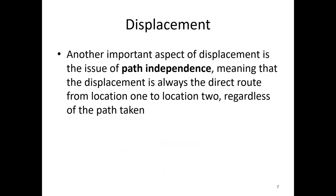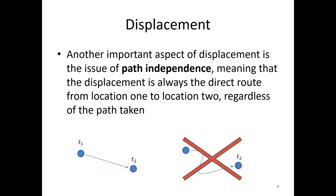An important aspect of displacement is path independence: displacement is always the direct route from location one to location two, regardless of the actual path taken. So even if the particle moved along some curving, flowing path from t1 to t2, that path is not the displacement. The direct route is the displacement — simply position one to position two.